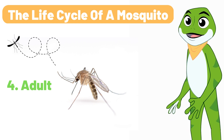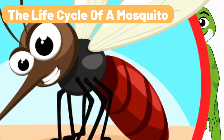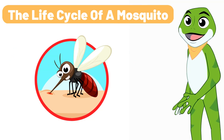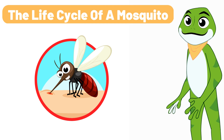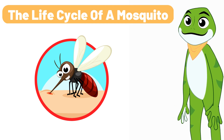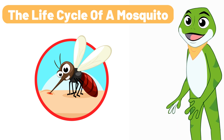The adult mosquito needs to find a mate to reproduce. The female mosquito requires a blood meal to lay her eggs. She bites humans and animals to get blood, and the proteins in the blood help her eggs develop.